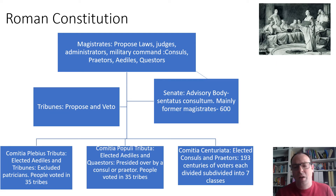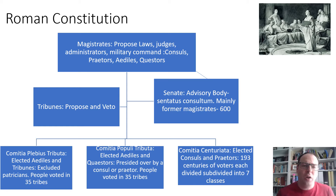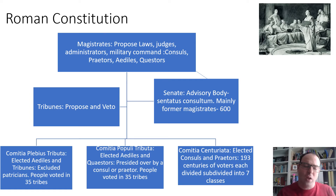I'm going to break down the constitution and its different moving parts and look at how they interact. The key figures in Rome are the magistrates. They would propose laws, act as judges and administrators, and some would hold military command. The cursus honorum included key positions: quaestor, aedile, praetor, and consul. These were often the most important men in Rome, and they were elected annually.